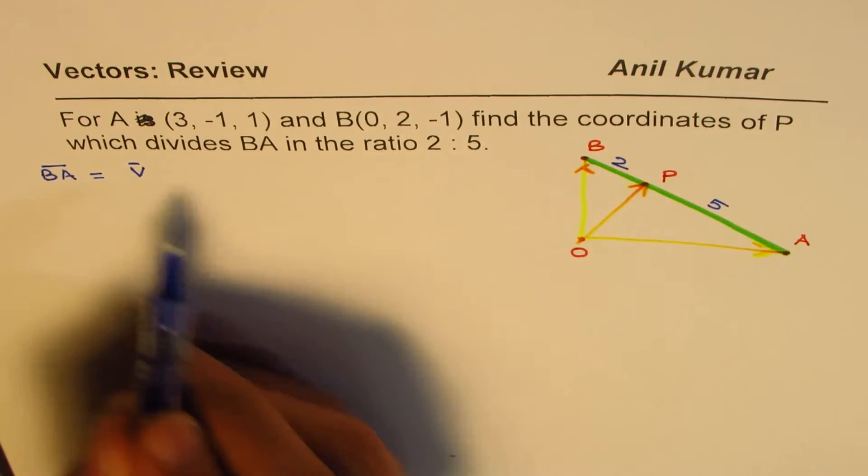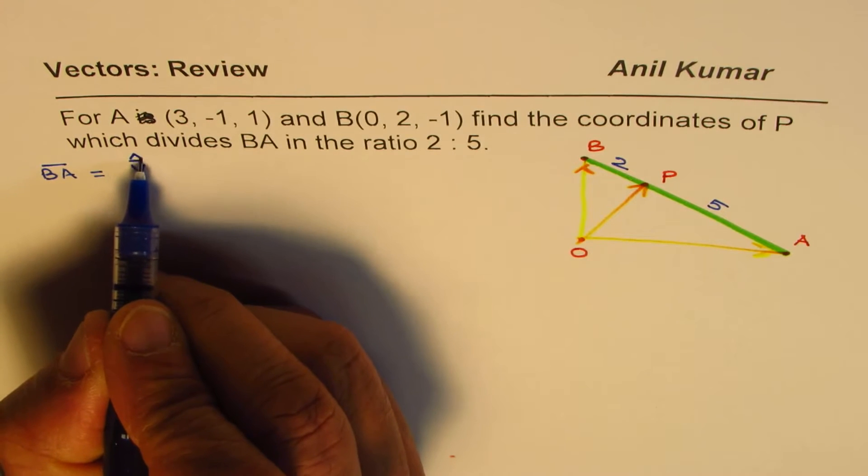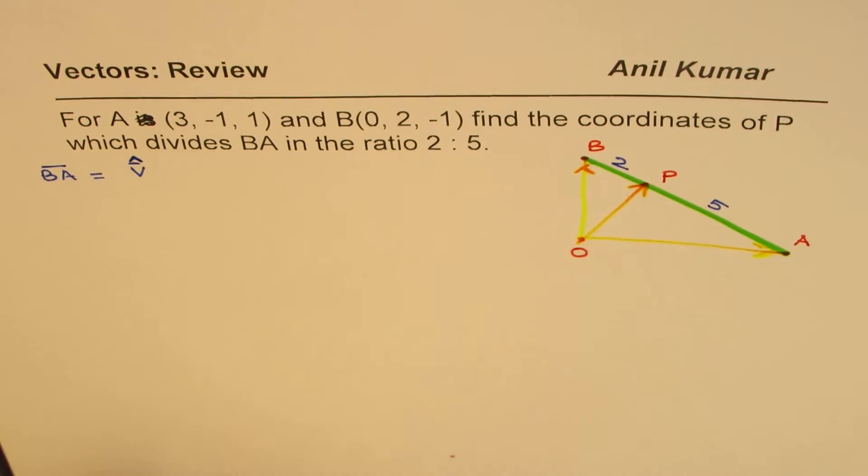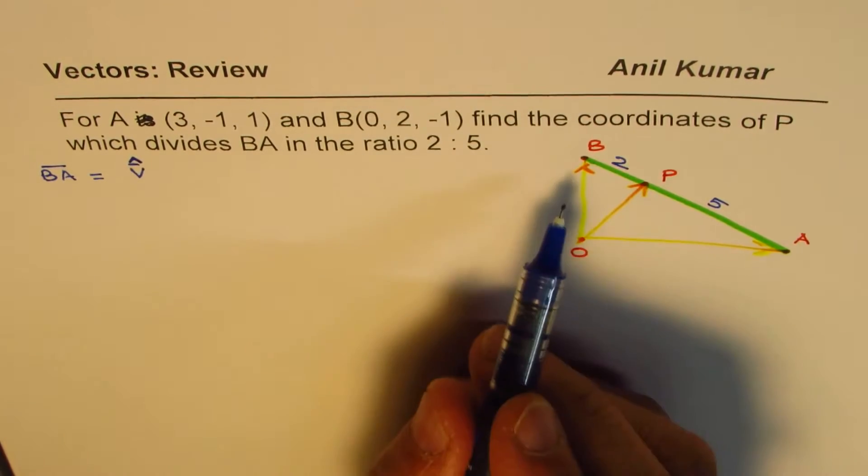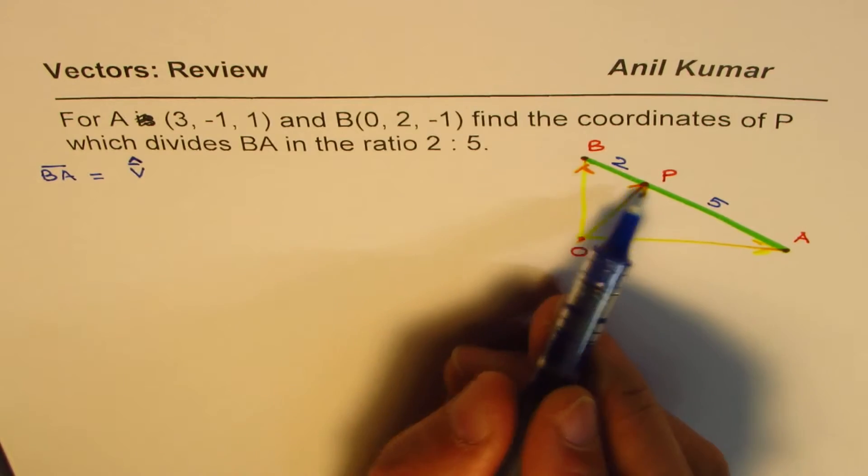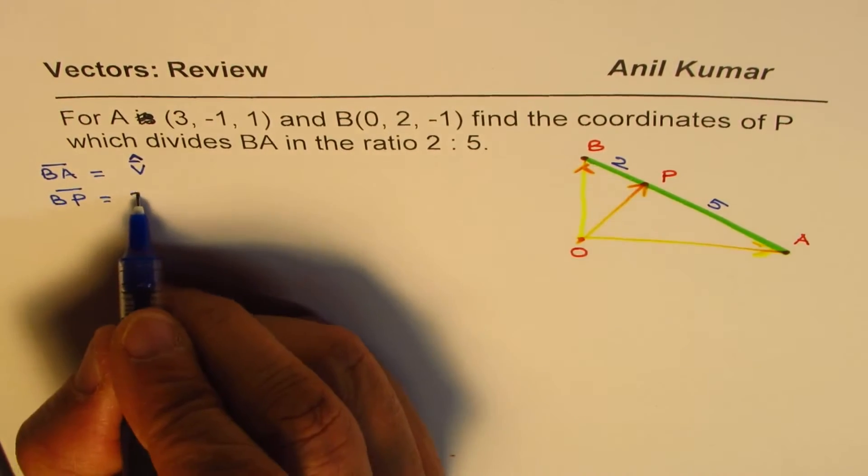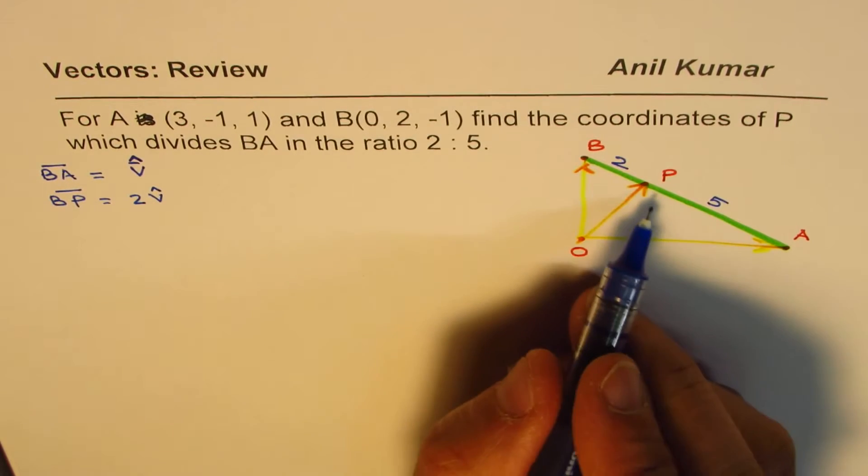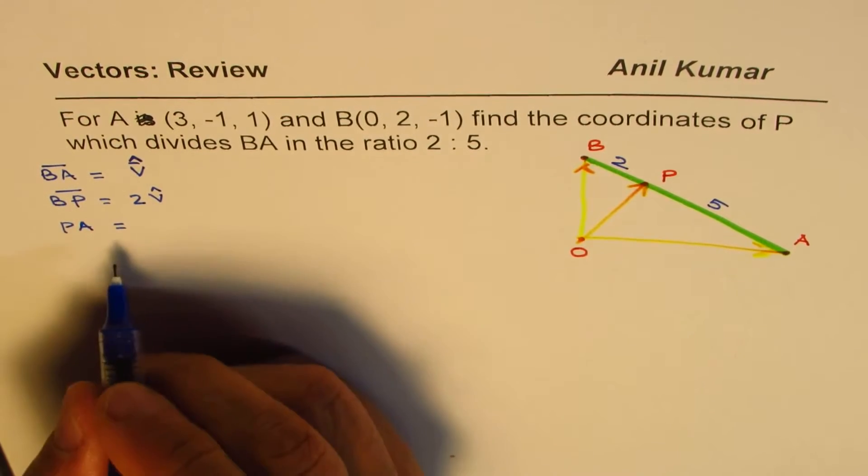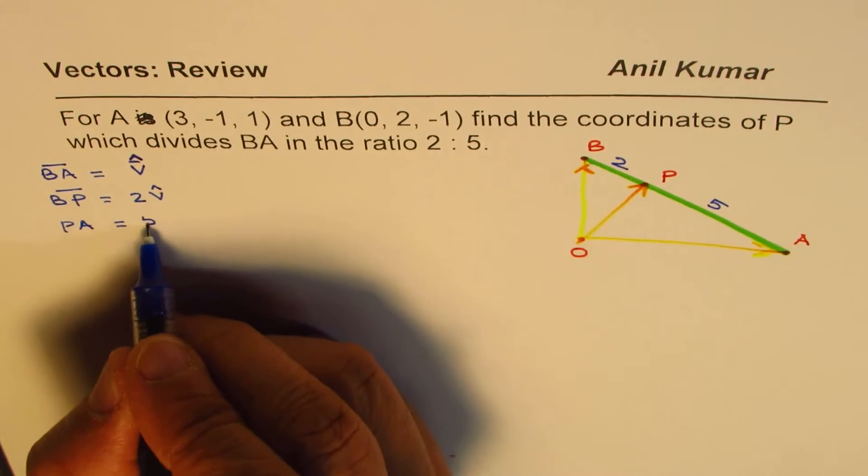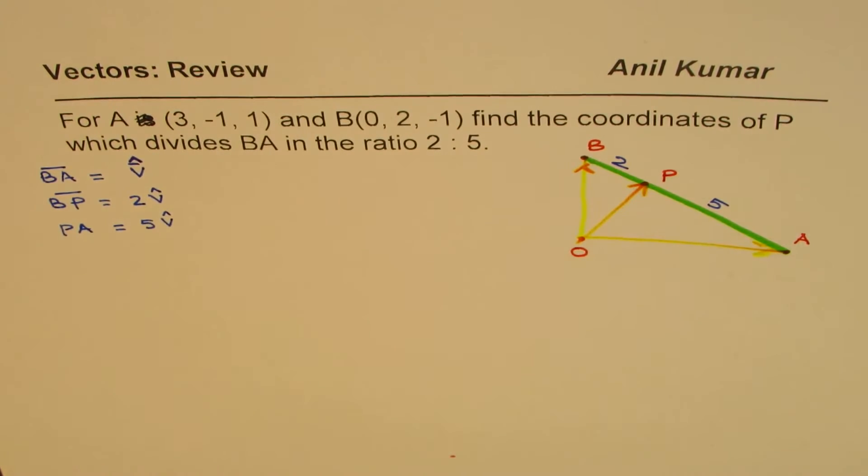That is to say that if we have BA, we could denote BA as, let's say in general, we'll say BA is some unit vector V. Let's say V is the unit vector in the direction of BA. In that case, BP could be written as 2 times this unit vector, correct? And PA will be equals to 5 times this unit vector.